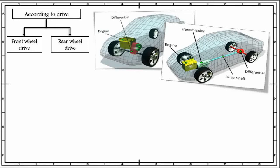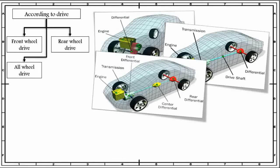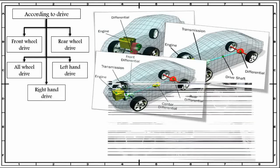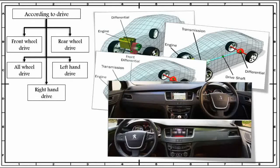According to drive, the third type is all wheel drive. In this type of chassis layout, the engine is fitted at the front or in the back and the drive is given to both front wheels as well as the rear wheels. The differential will be present in the front as well as at the back. The fourth and fifth categories according to drive are left-hand drive and right-hand drive. When the driver is seated on the left-hand side of the vehicle, it is known as left-hand drive, whereas when seated on the right-hand side, it is known as right-hand drive. Left-hand drive is used in western countries like Canada and USA, whereas right-hand drive is more popular in European and Asian countries like India, China, and Pakistan.